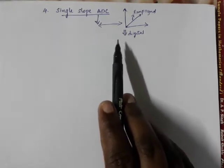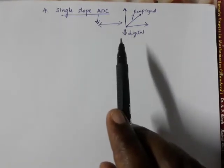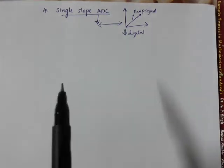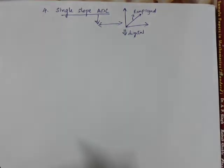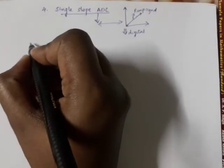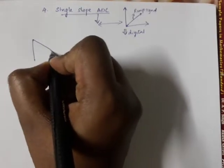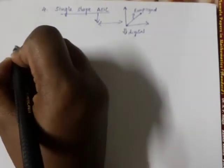Now we are going to look at a general circuit. The analog input is compared against a ramp signal. The ramp signal is generated by a ramp generator circuit.